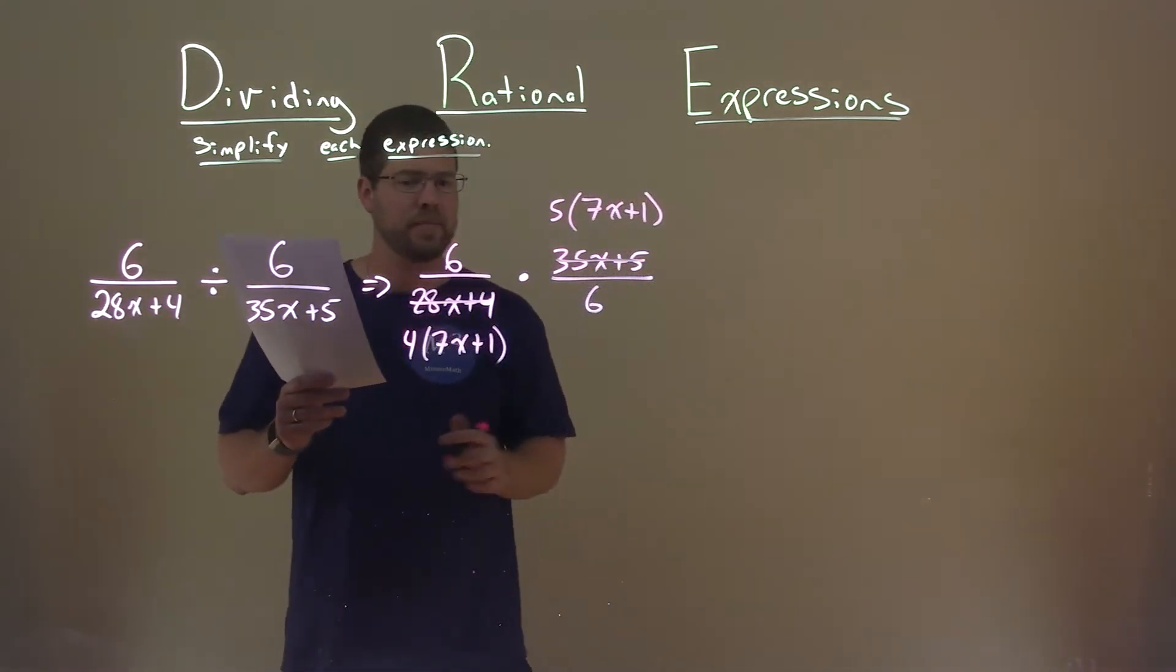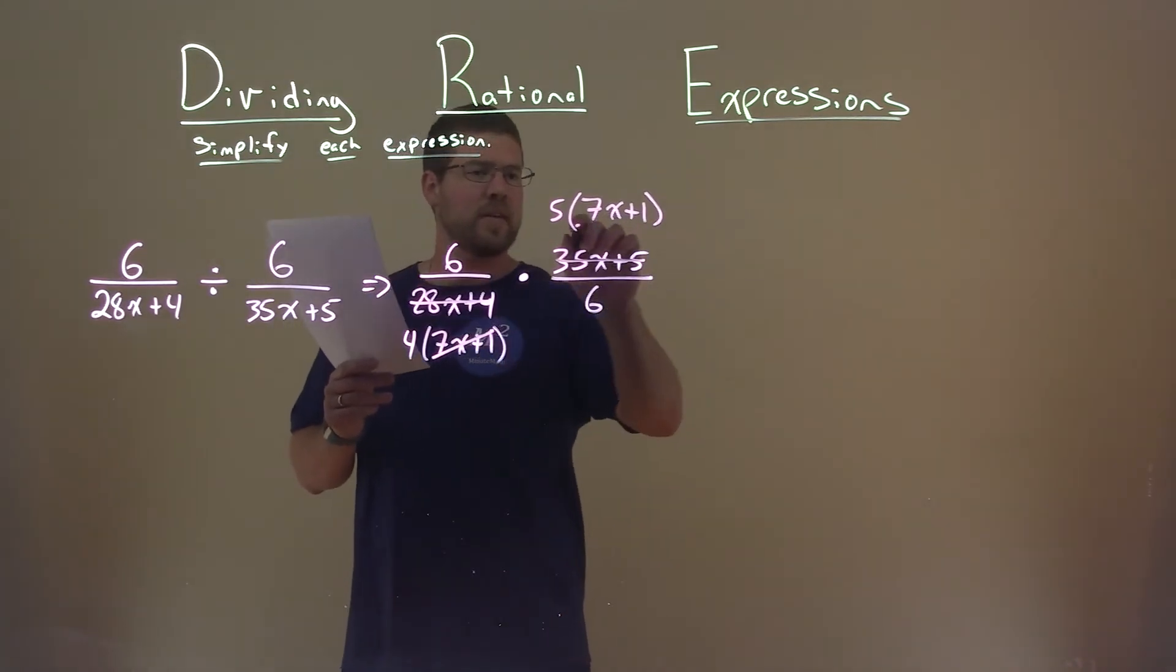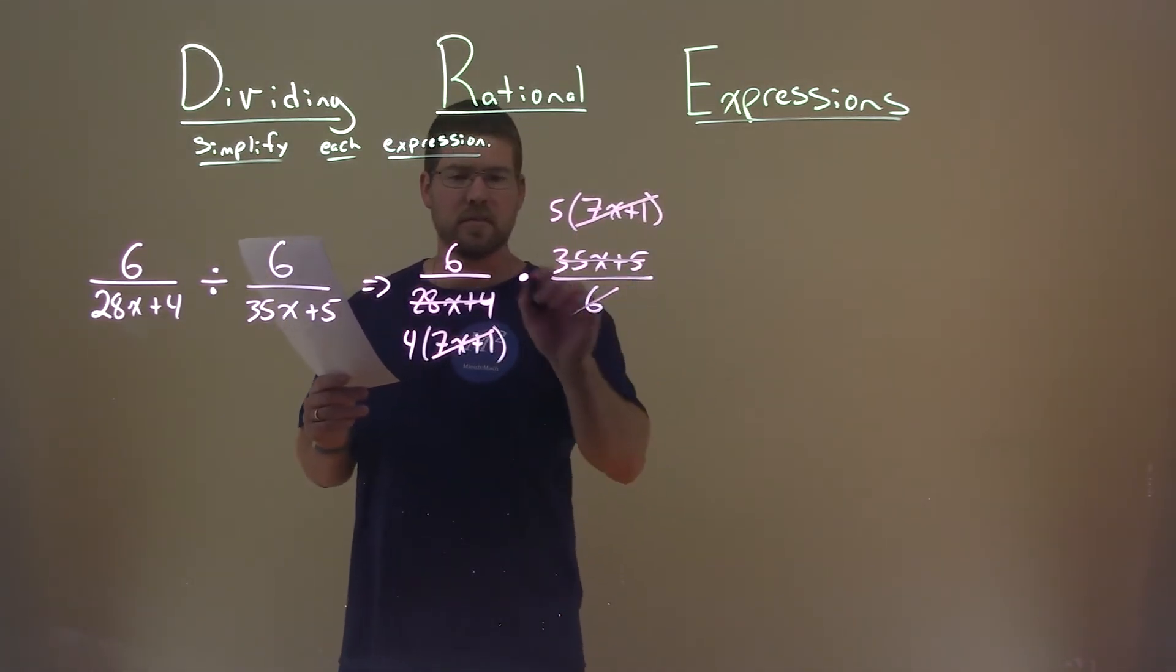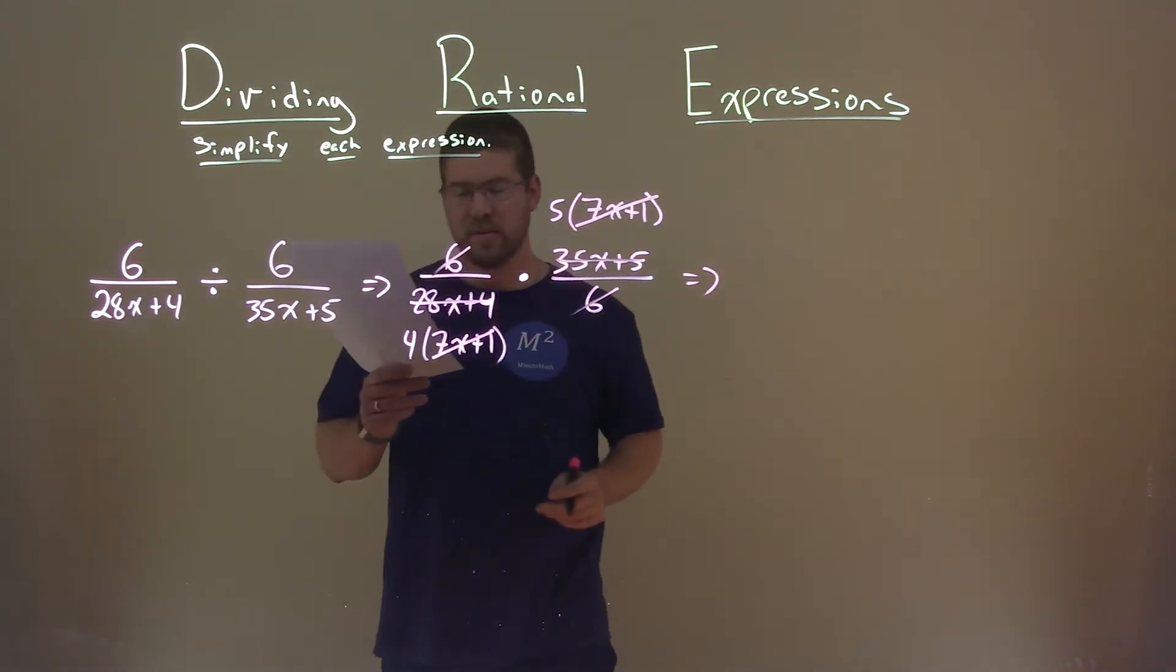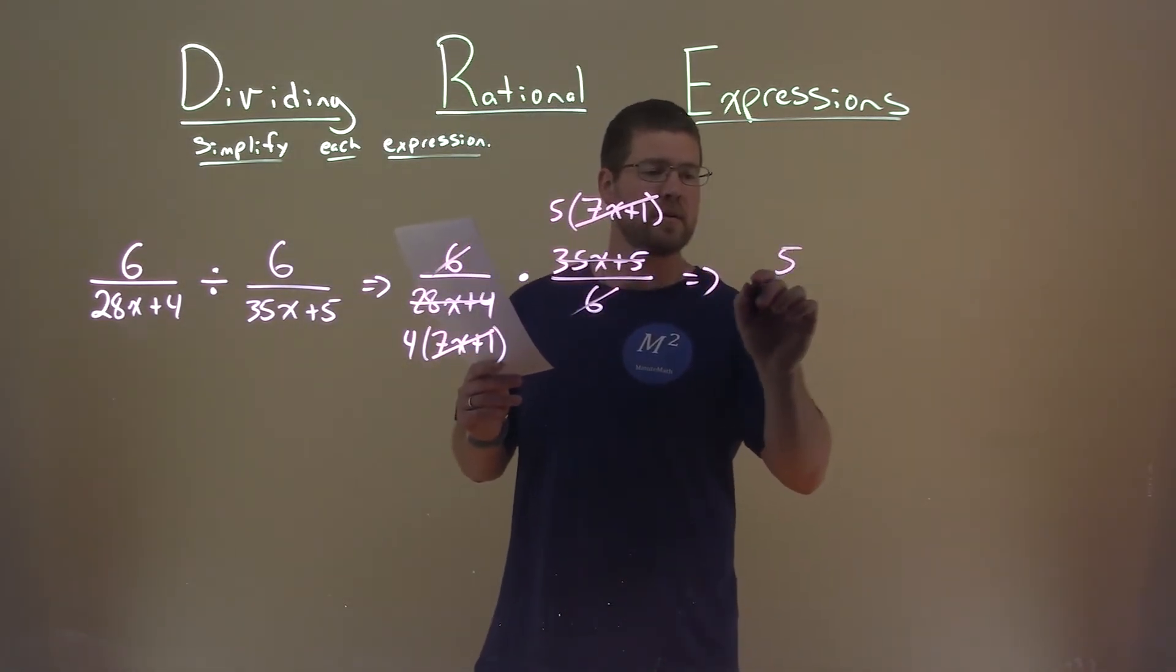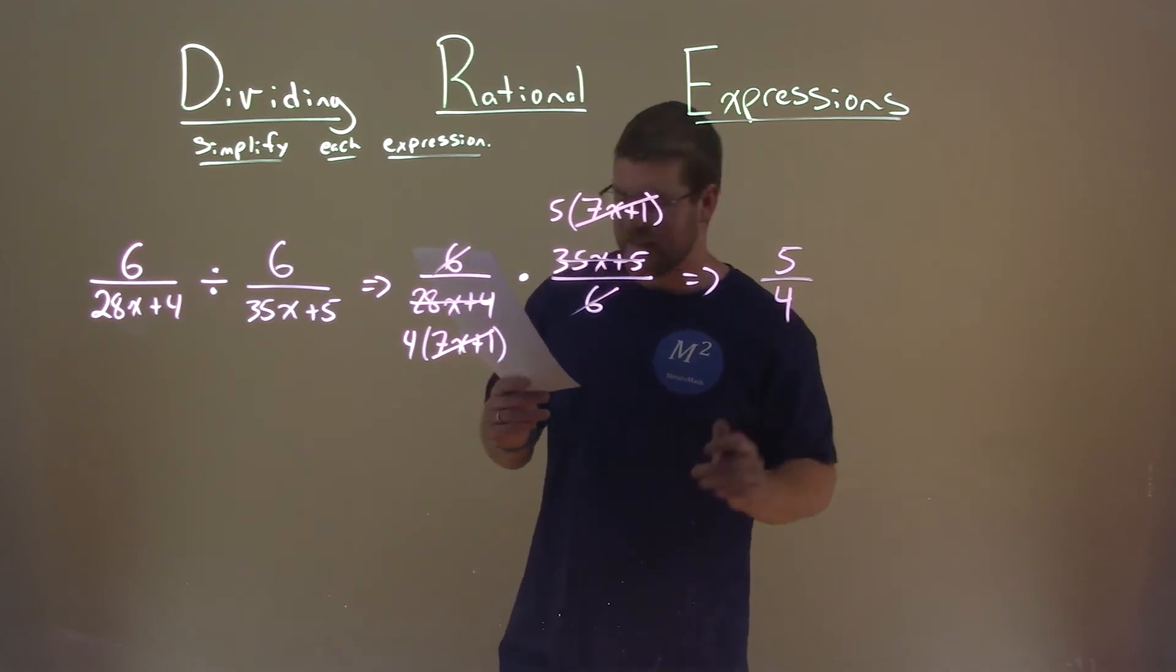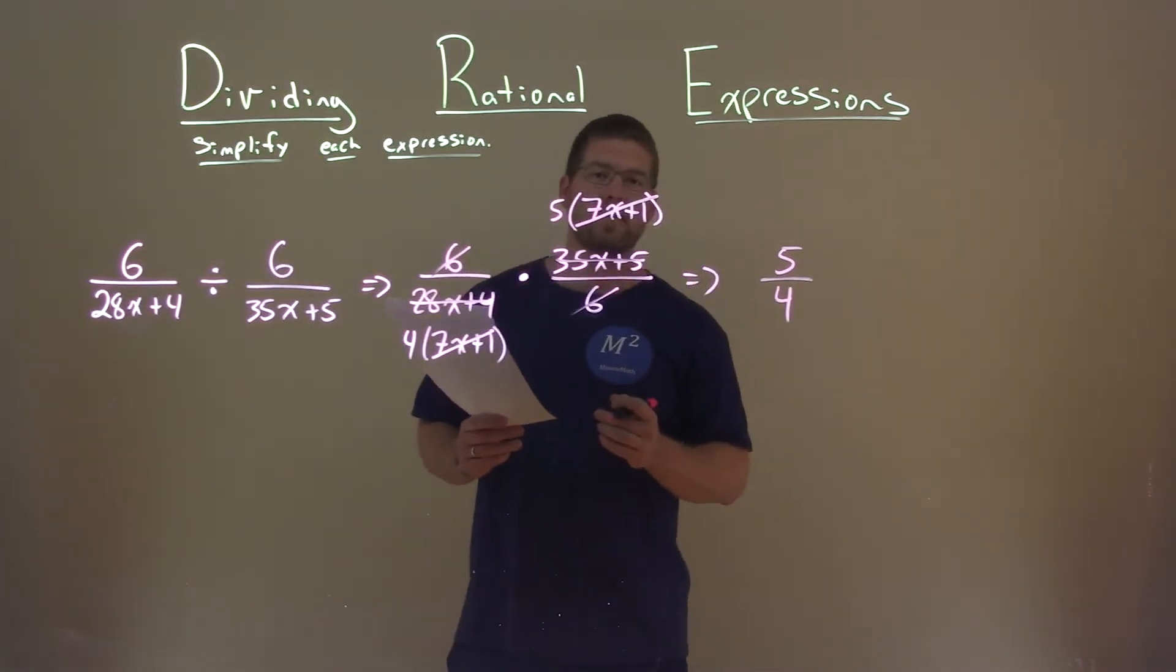Now let's cancel where we can. 7x plus 1, 7x plus 1 here cancels. The 6s cancel, and what are we left with? Well, just the 5 and the 4. 5 is in the numerator, 4 is in the denominator, and that's it. 5 fourths is our final answer.